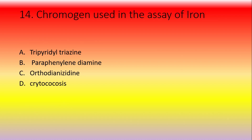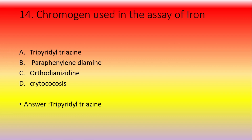Chromogen used in the assay of iron — option A: tripyridyl triazine, option B: paraphenylenediamine, option C: orthodianisidine, option D: (a tricky unrelated option). The answer is tripyridyl triazine. Orthodianisidine can be used for some other estimations such as copper and hemoglobin variants.